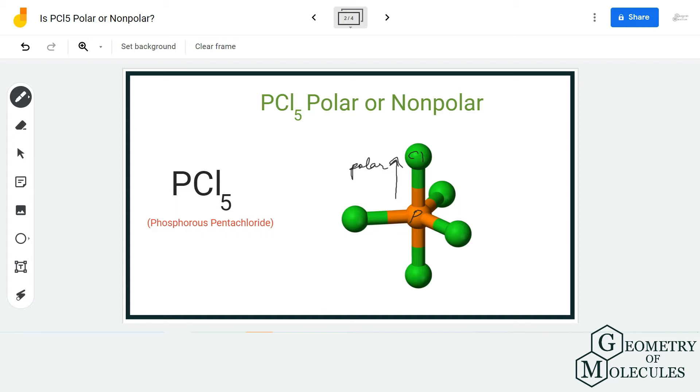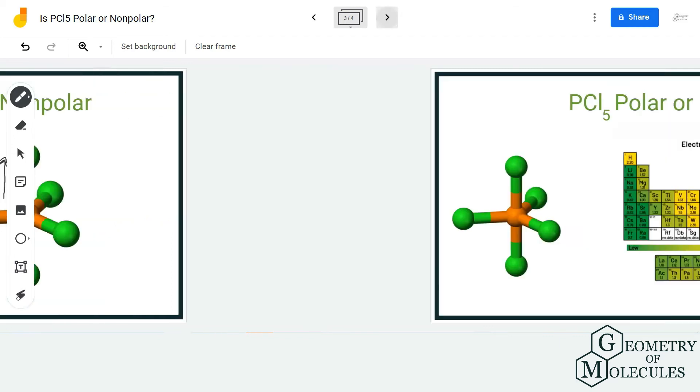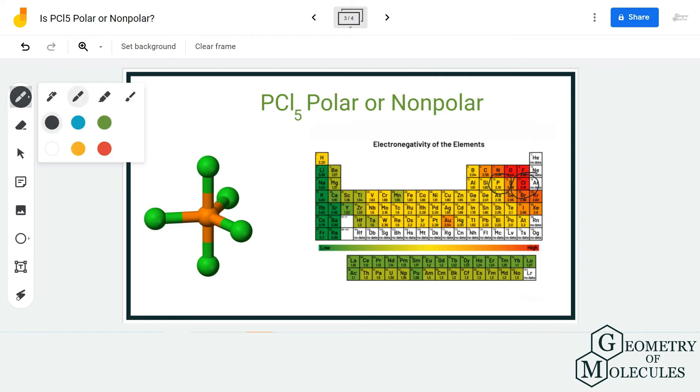But hold on—you also need to look at the shape and the geometry of the molecule to answer this question. If you look at its shape in 3D, you will see that all the chlorine atoms are arranged symmetrically around the phosphorus atom. Generally, molecules that have symmetry are non-polar in nature.